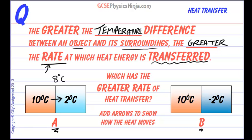In part B, the temperature difference is 10 minus minus 2 degrees. There's a distance of 12 degrees between the hotter and the cooler, and so we're going to get a higher rate of heat movement between the hotter and the cooler body in part B.